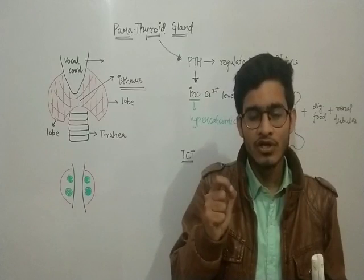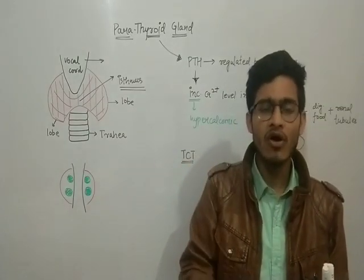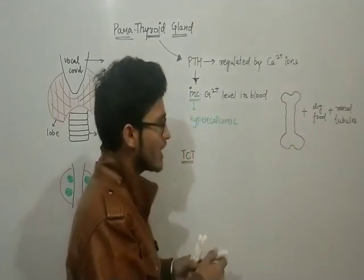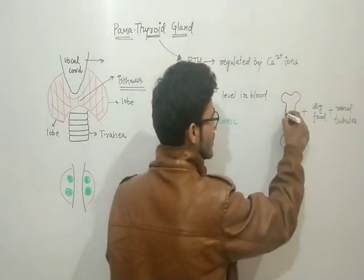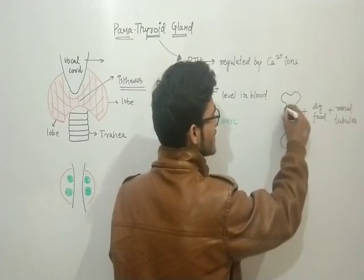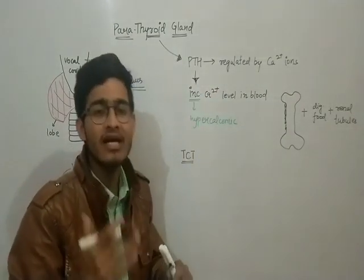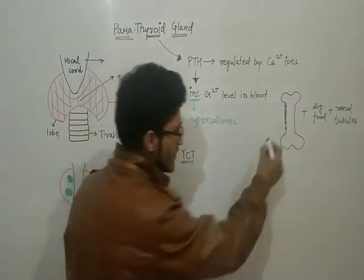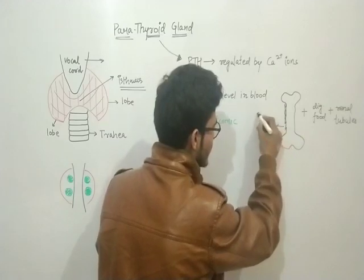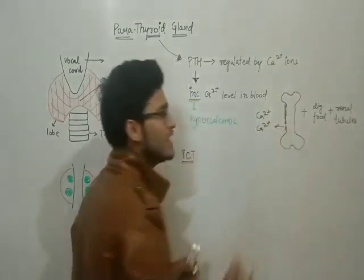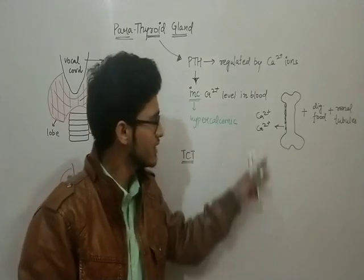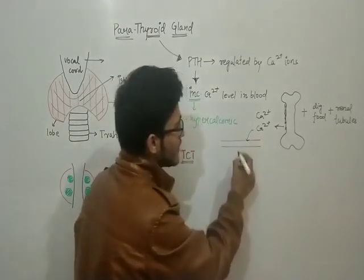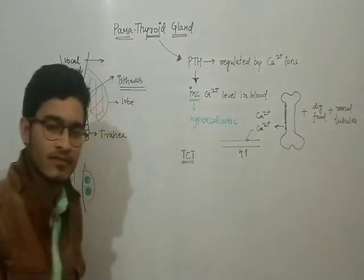And the third important thing, what is the main source of calcium in our body? Obviously our bones. So due to the dissolution or demineralization of bone. Demineralization means simply calcium is removed from it because calcium acts as a mineral. So if you will remove the calcium from the bones, it will be demineralized or it will be dissolved. So that calcium will enter the bloodstream and the blood calcium level will increase.